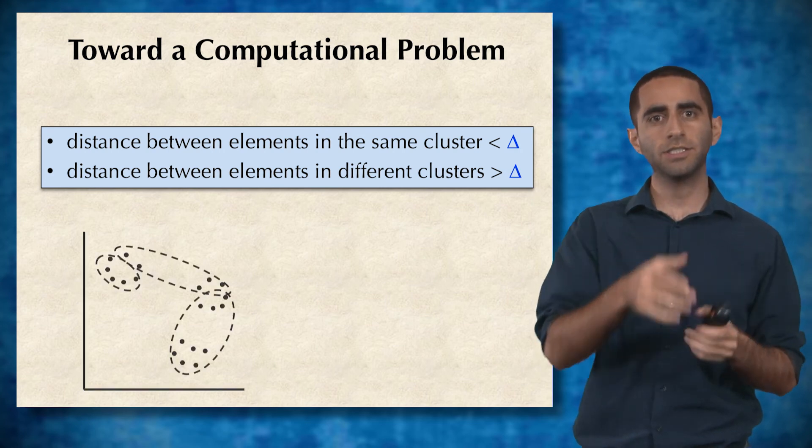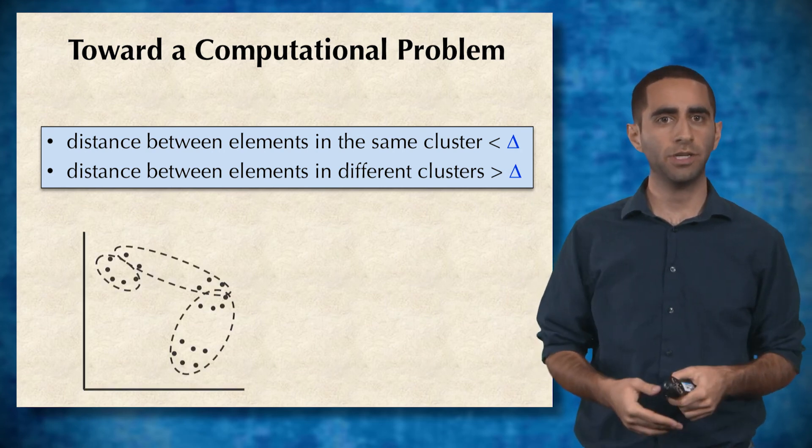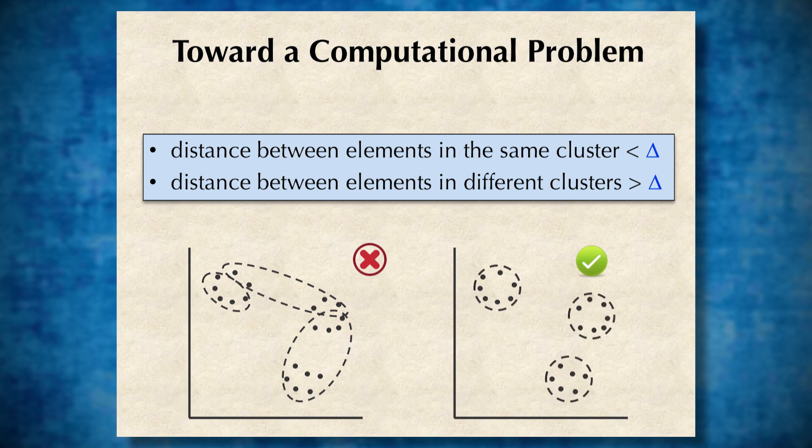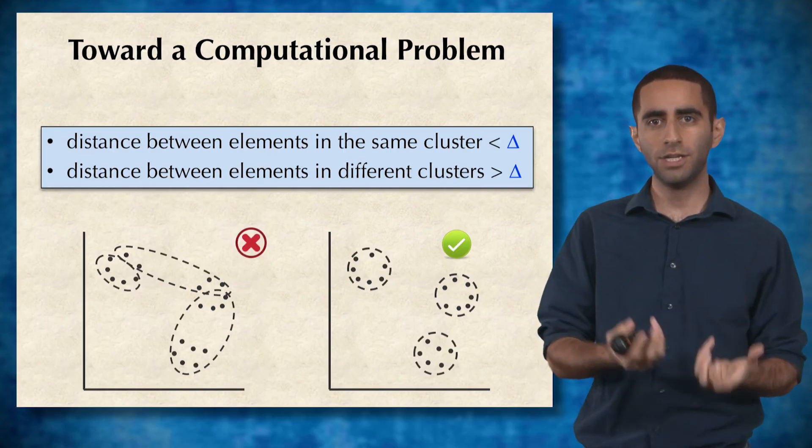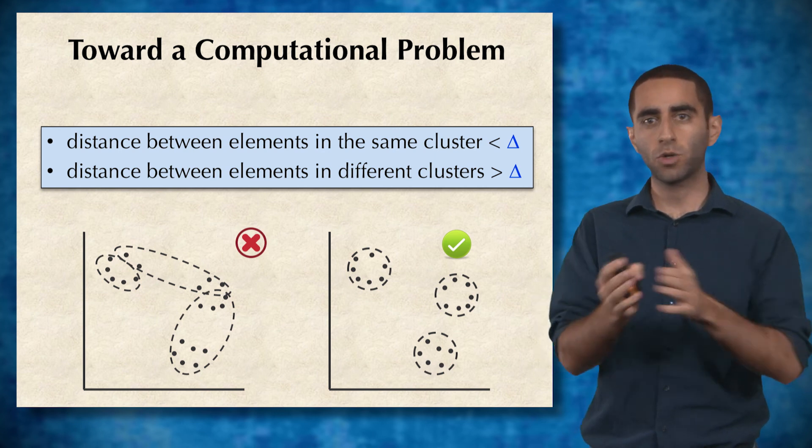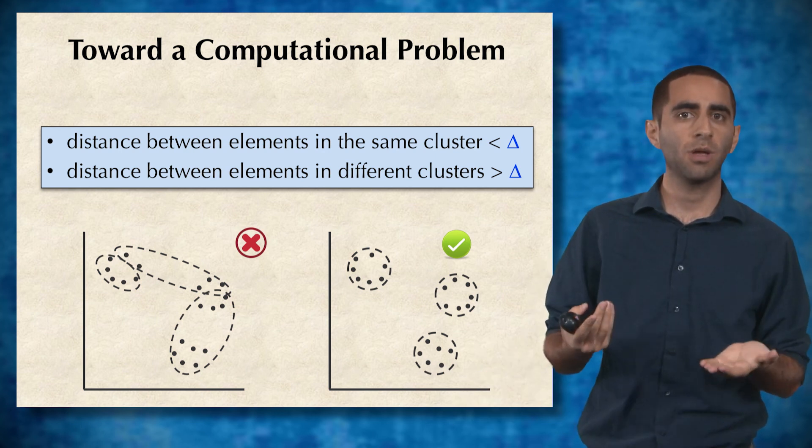As you can see in this example, this is probably a bad clustering because we have some elements in this top set of points that are extremely far apart but in the same cluster. In reality, we'd probably want to make three different clusters in this example. Now we have within each cluster fairly small pairwise distances between elements, and across clusters, we have fairly large pairwise distances.